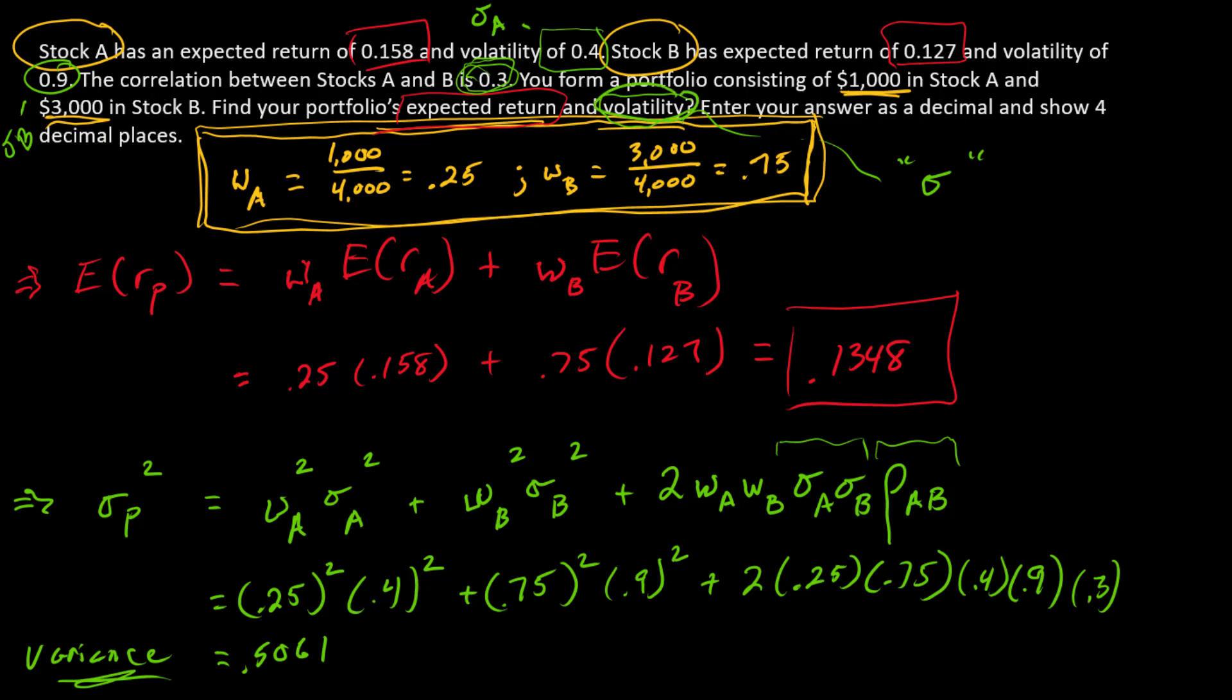But what do we want? We want the volatility. So the volatility, which is the same thing as sigma, sigma P equals the square root of that number. So 0.5061 square root, which is 0.7114. So there is the answer.